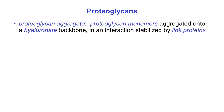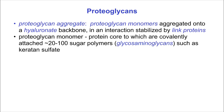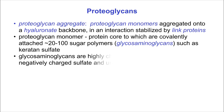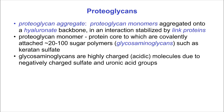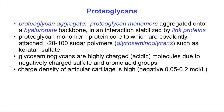Proteoglycan monomers aggregate onto backbones of hyaluronic acid in an interaction stabilized by link proteins. Proteoglycan monomers have a protein core with 10 to 20 sugar polymers known as glycosaminoglycans or GAGs, such as keratin sulfate, covalently attached. Glycosaminoglycans are highly charged acidic molecules due to their negatively charged sulfate and uronic acid groups. Consequently, the fixed charge density of articular cartilage is high, as much as minus 0.05 to 0.2 moles per liter.